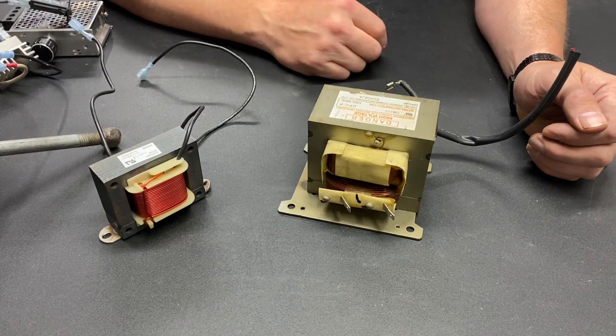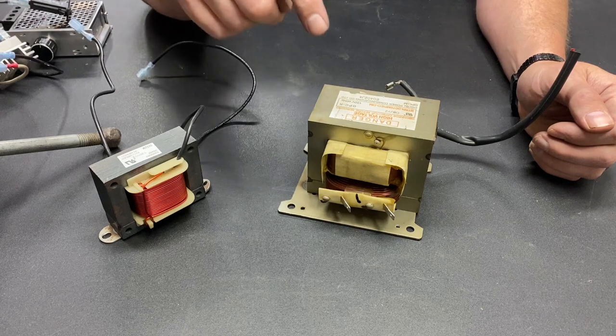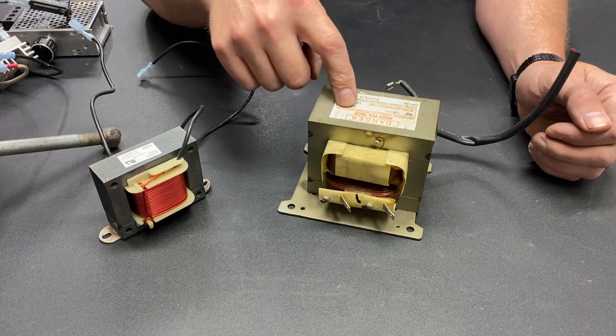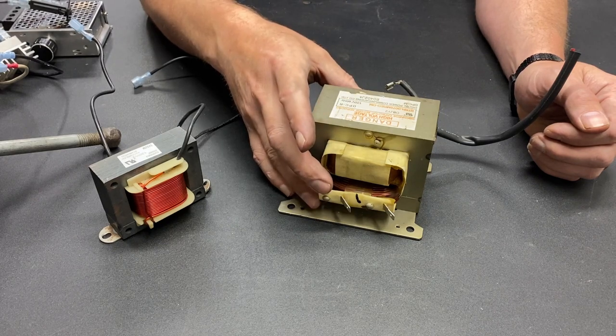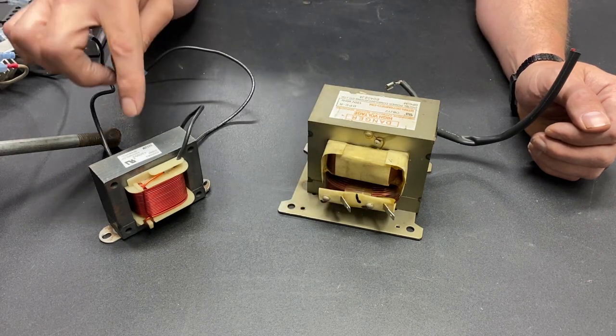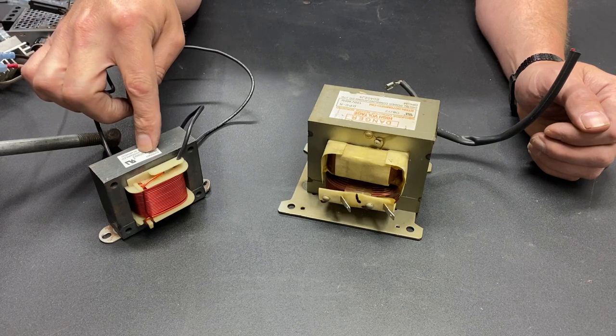But what I want to find out is if I can take one of these, take it apart, add a single coil of wire in it instead of the double coil that it comes with and convert it into one of these.